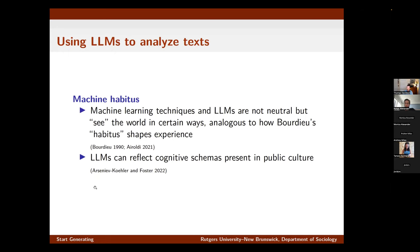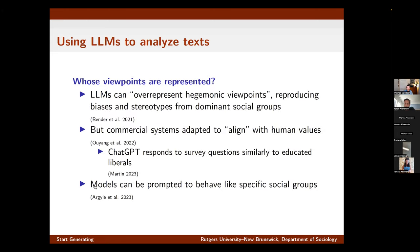When we're using models to do interpretation, we can think of them as having an approach to interacting with data that might mirror the way a research assistant or we ourselves would analyze data. But the big problem, as outlined particularly in this paper by Emily Bender and colleagues on stochastic parrots, is that these models often represent certain viewpoints and privilege some perspectives over others. In particular, they argue that large language models over-represent hegemonic viewpoints and reproduce biases and stereotypes of dominant groups, leading to a lot of skepticism about the use of these models in social scientific research.